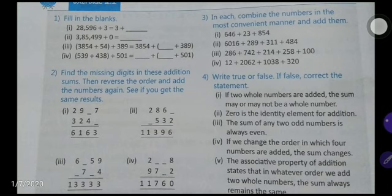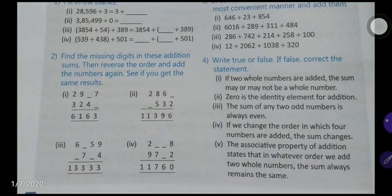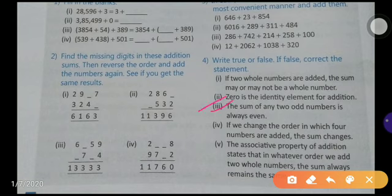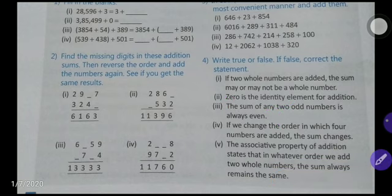Third statement: the sum of any two odd numbers is always an even number. This is true. Whenever you add any two odd numbers, you will always get an even number.